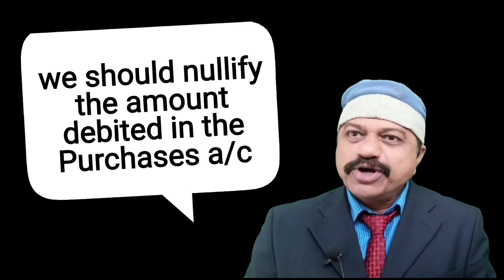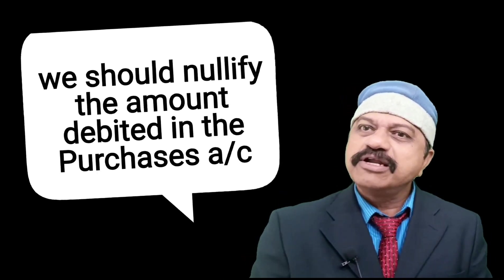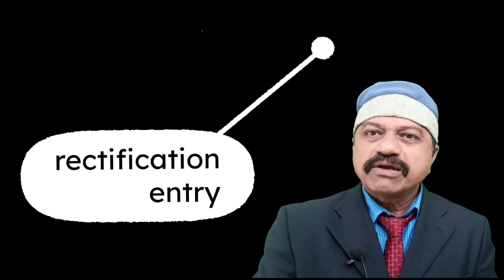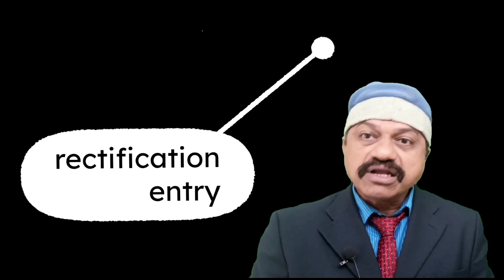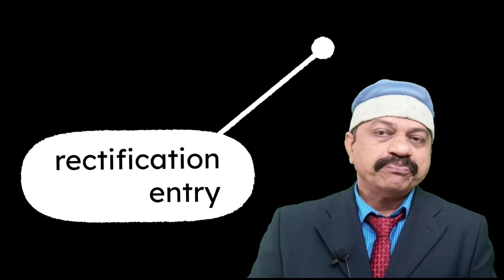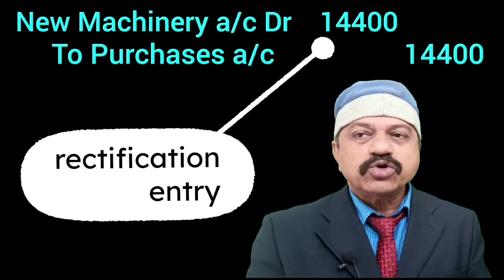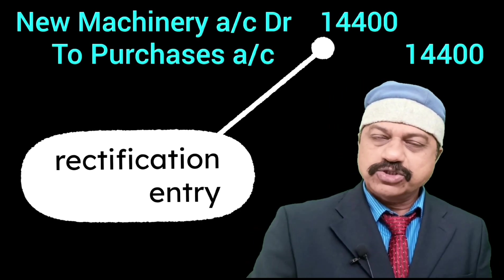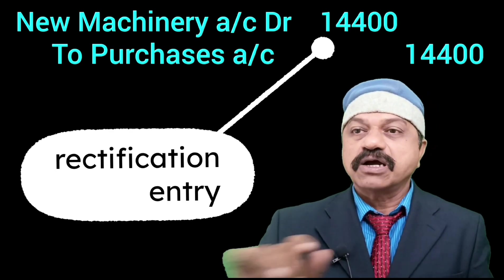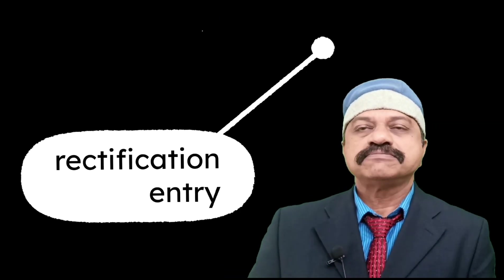Therefore, the rectification entry should be: New Machinery Account Dr 14,400 to Purchase Account 14,400.